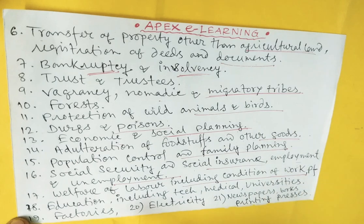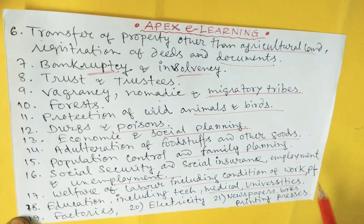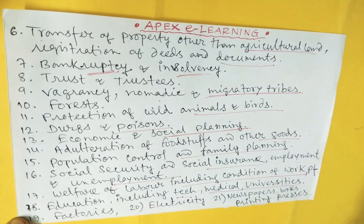Education, including technical and medical education and universities. Factories. Electricity. Newspapers, books, and printing presses. These subjects are all under the concurrent list.